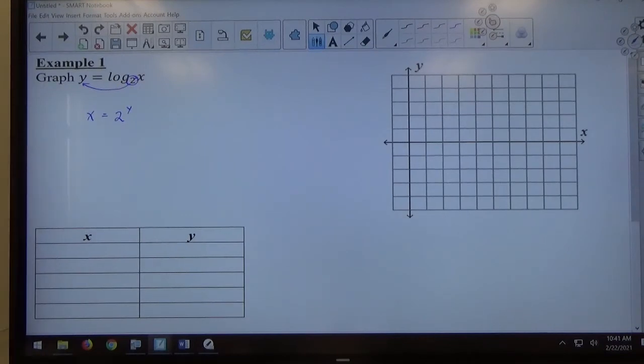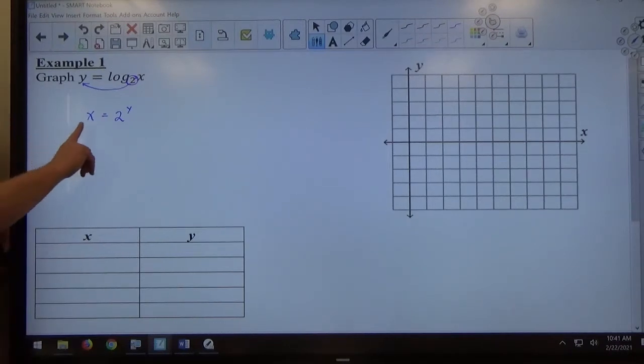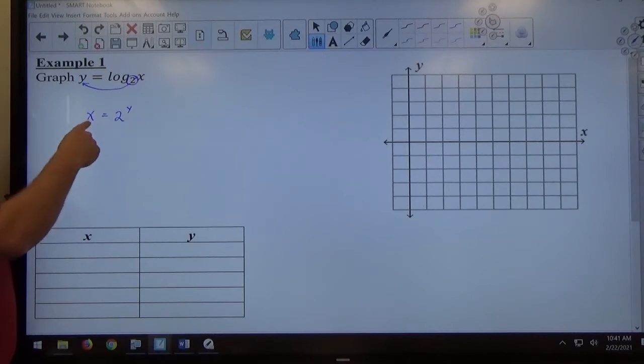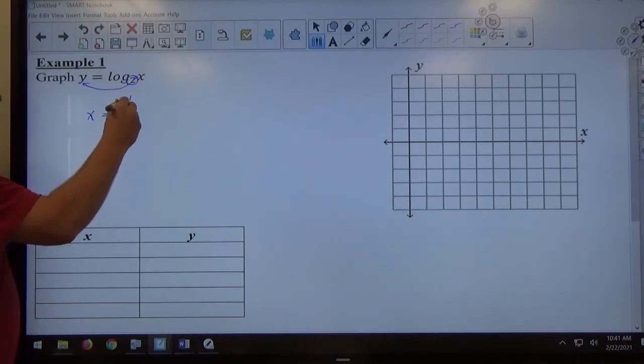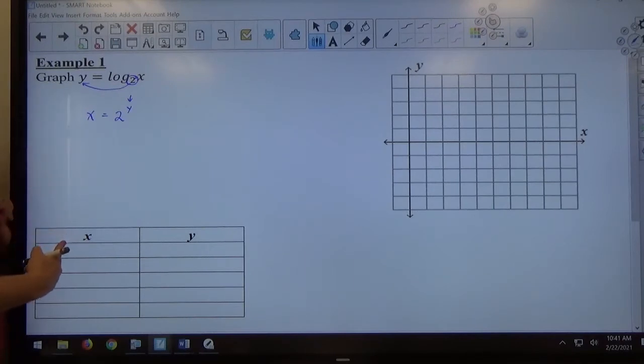If you change from a logarithm into an exponential expression, typically when we graph things, we pick x to solve for y, right? We make the independent variable x. Earlier in the chapter, we were graphing exponential functions. It would have said y equals 2 to the x power, and I told you to pick negative 2, negative 1, 0, 1, and 2 for the power. Well, here the power is y, so where I usually have an independent variable x to solve for y, now I'm going to have an independent variable y to solve for x. That's the easier way to evaluate this.